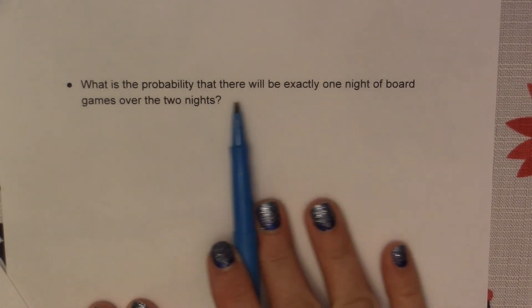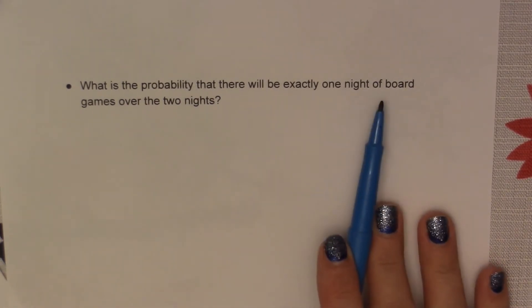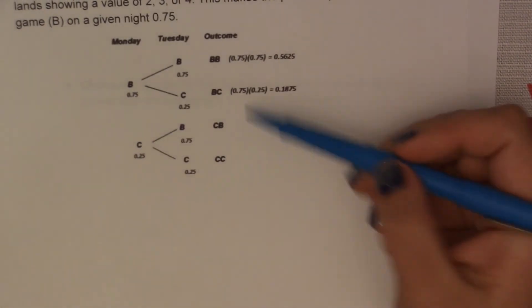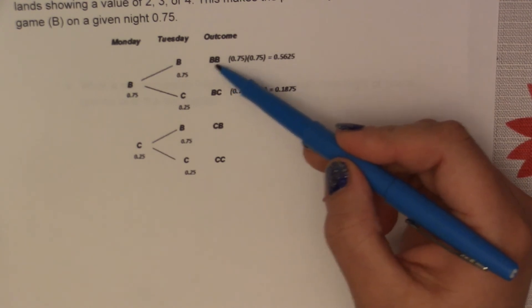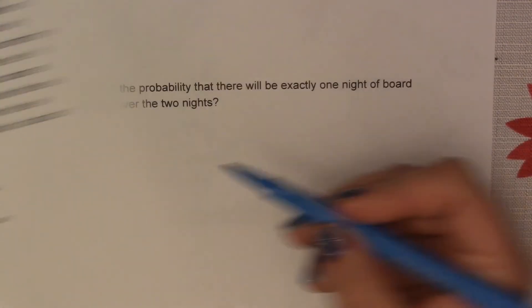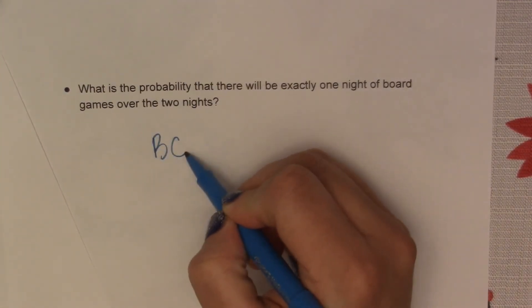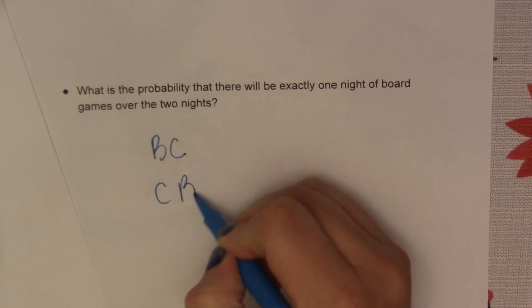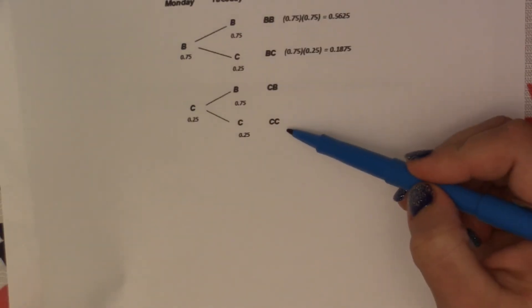What is the probability that there will be exactly one night of board games over the two nights? So we're going to go back to our table. So this has one board game, or two board games over two nights, so this would not be a possible outcome. This has one board game over two nights, so we could use the outcome BC. This has one board game over two nights, CB. And then this has no board games, so that is not an option as well.